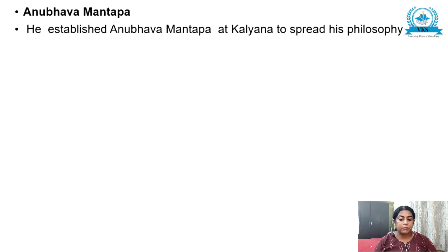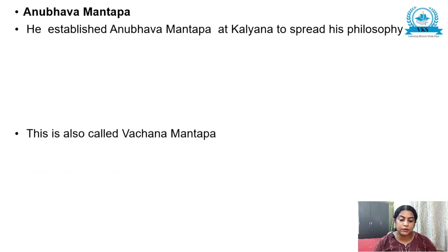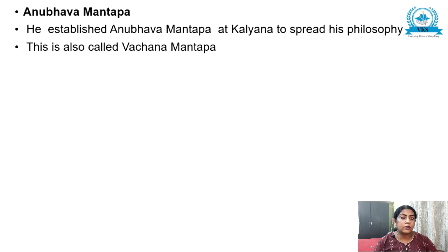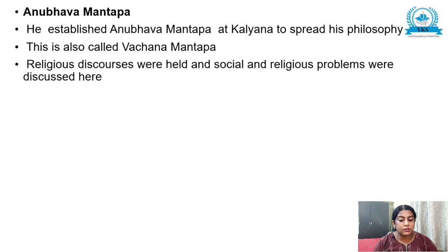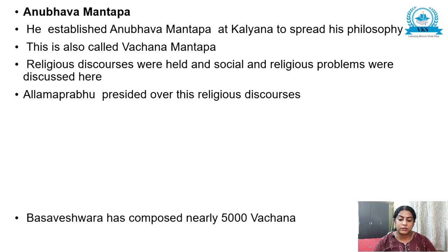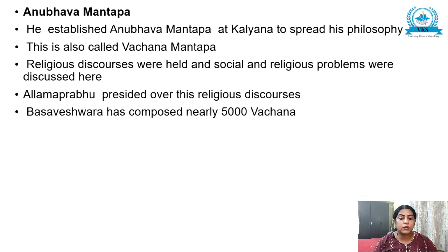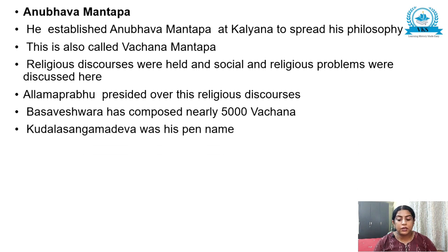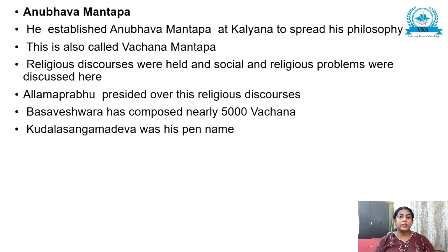Basavishwara established the Anubhava Mantapa at Kalyana to spread his philosophy, also called Vachana Mantapa. Religious discourses and discussions on social and religious problems were held here. Allamma Prabhu presided over the religious discourses. Basavishwara composed nearly 5000 vachanas and his pen name was Kudala Sangama Deva.